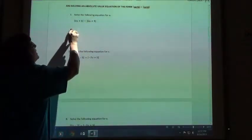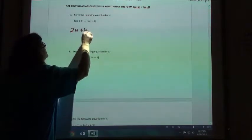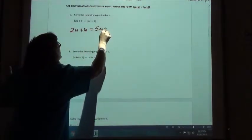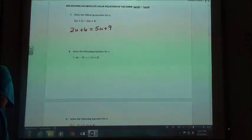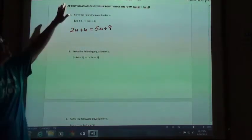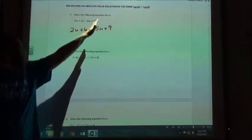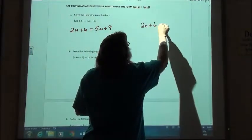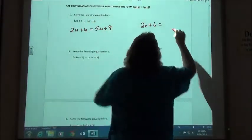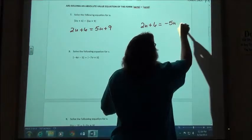So I would first of all say either the 2u plus 6 could equal 5u plus 9, leaving everything exactly the same as it was, just dropping the absolute values. On my other case, one side you're going to leave the same, the other side you're going to do the opposite. It doesn't really matter which way you do it, I usually leave the left side alone and do the opposite of the right side. So I would say 2u plus 6 would equal the opposite of both of those, so negative 5u minus 9.